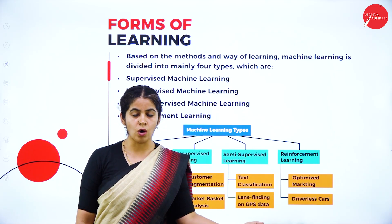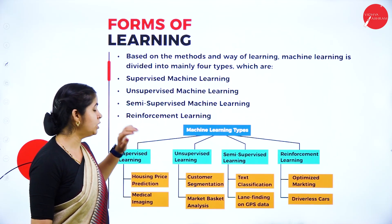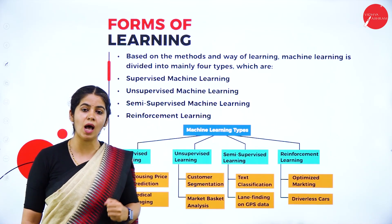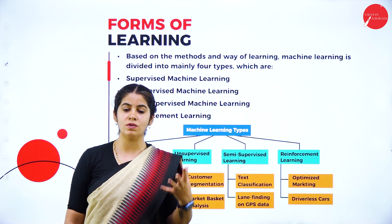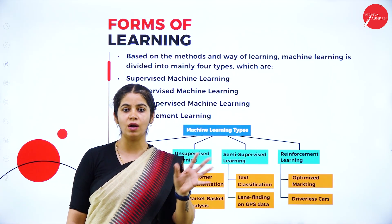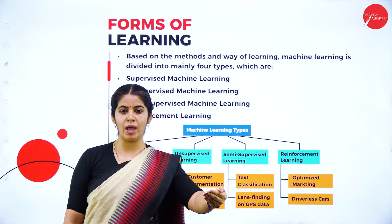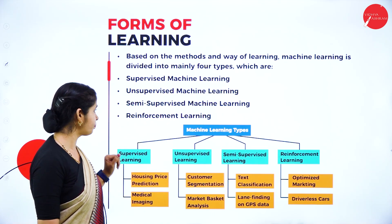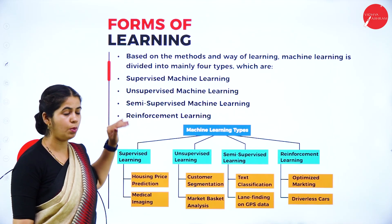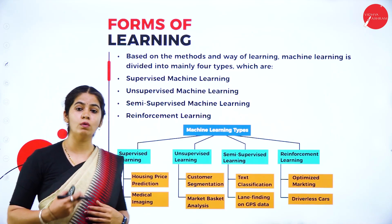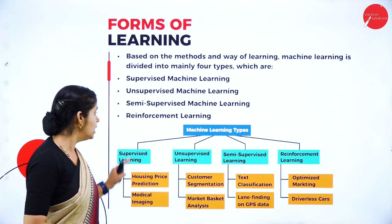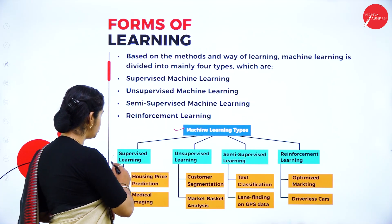In unsupervised learning, the machine has its own data, learns by its own data, and produces its own output. In semi-supervised learning, some of the data sets are given in supervised mode and some in unsupervised mode. First we provide training to the machine, and once training is done, it will do the remaining task by itself. Semi-supervised learning is a combination of supervised and unsupervised. In reinforcement learning, we are forcing the machine to learn from its circumstances.